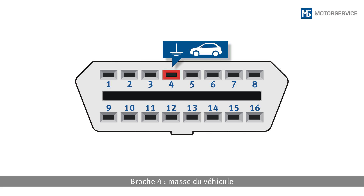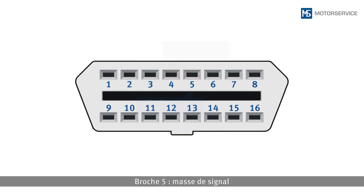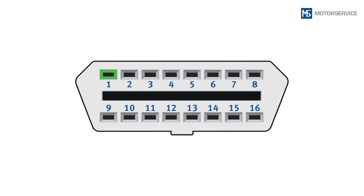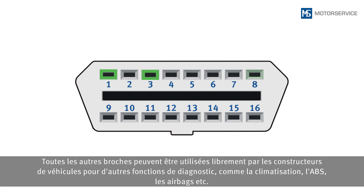Pin 4 is vehicle ground, Pin 5 is signal ground, and Pin 16 is the positive battery terminal. All other pins can be freely used by vehicle manufacturers for additional diagnostic functions, such as air conditioning, ABS, airbags, and so on.